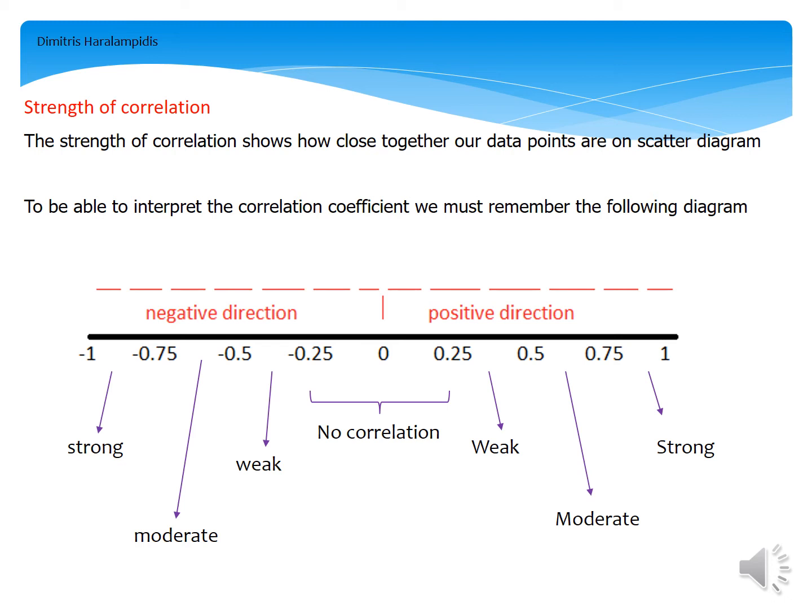Moving on, if the correlation coefficient is between 0.25 and 0.5, we say that we have a weak positive direction. If the correlation coefficient is between 0.5 and 0.75, we have a moderate positive direction. And finally, if the correlation coefficient is between 0.75 and 1, we have a strong positive direction.